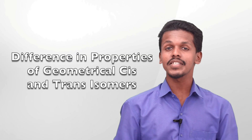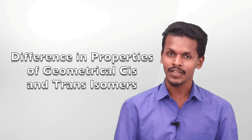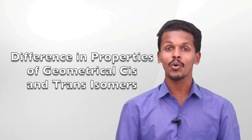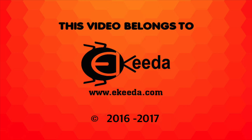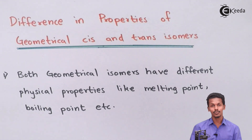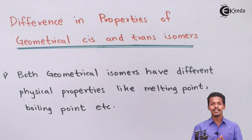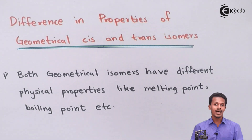Hello friends. In the last lecture we studied about what isomers are, and we discussed about geometrical cis and trans isomers. Now we are going to discuss the actual difference between cis and trans isomers. As we know, geometrical isomers are differentiated in terms of the spatial arrangement of atoms or groups in an alkene.